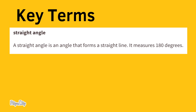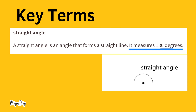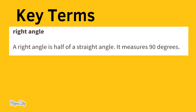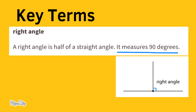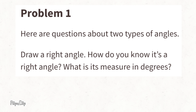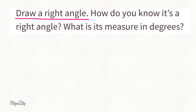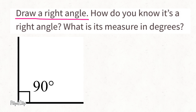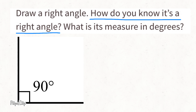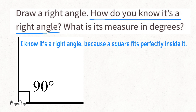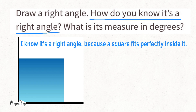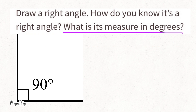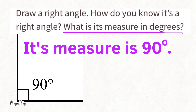A straight angle is an angle that forms a straight line — it measures 180 degrees. A right angle is half of a straight angle — it measures 90 degrees. Problem 1: Draw a right angle. How do you know it's a right angle? I know it's a right angle because a square fits perfectly inside it. Its measure is 90 degrees.